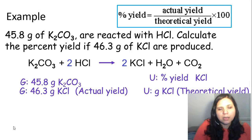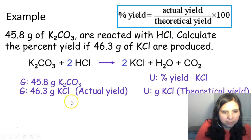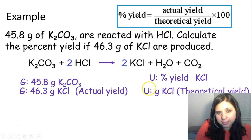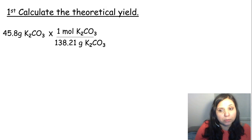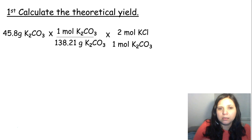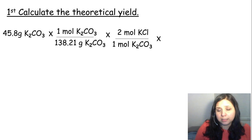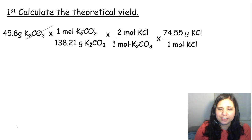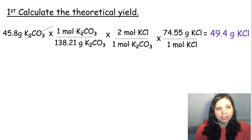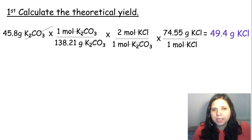The theoretical yield is a mass-to-mass problem, going from grams of potassium carbonate to grams of potassium chloride. The molar mass of potassium carbonate is 138.21 g/mol. I use the mole ratio — moles of unknown over moles of given — then apply the molar mass of potassium chloride, 74.55 g/mol. Canceling units and rounding to three significant figures gives 49.4 grams of potassium chloride.